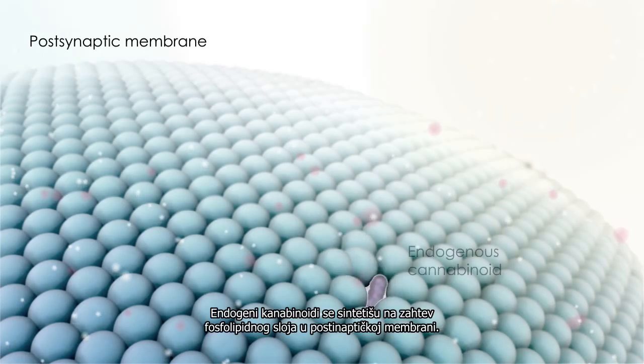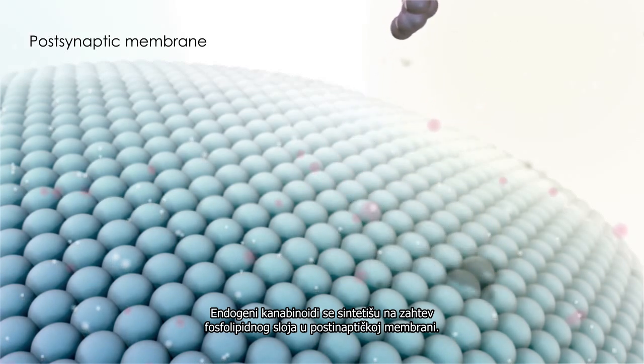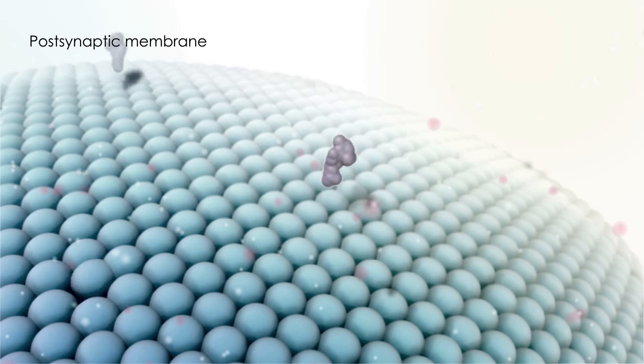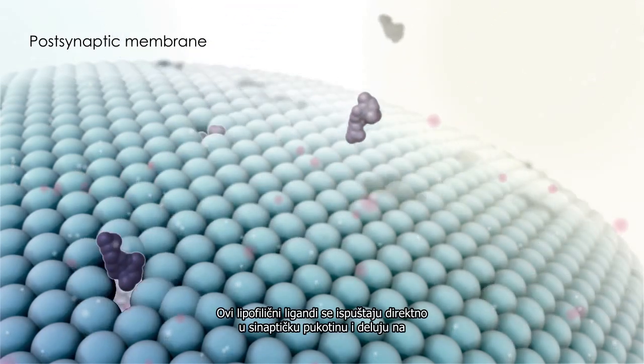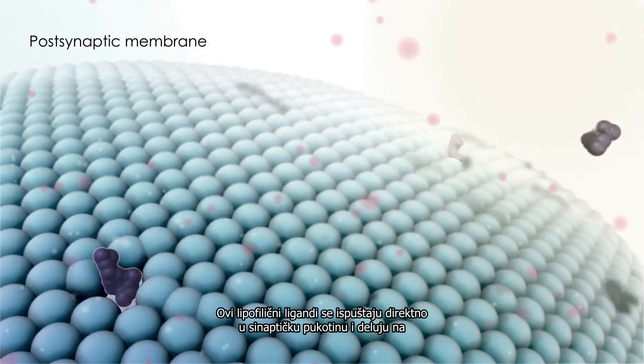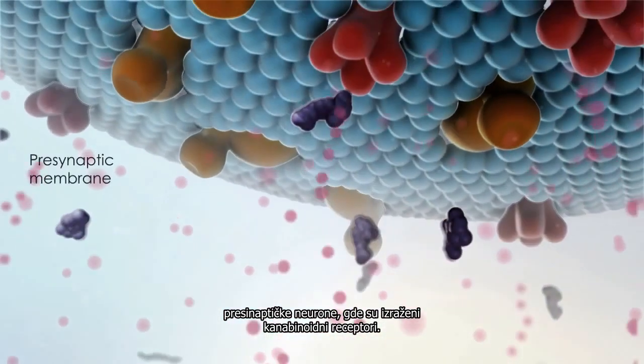Endogenous cannabinoids are synthesized on demand from the phospholipid bilayer of the postsynaptic membrane. These lipophilic ligands are released directly into the synaptic cleft and act in retrograde fashion on the presynaptic neuron where the cannabinoid receptors are expressed.